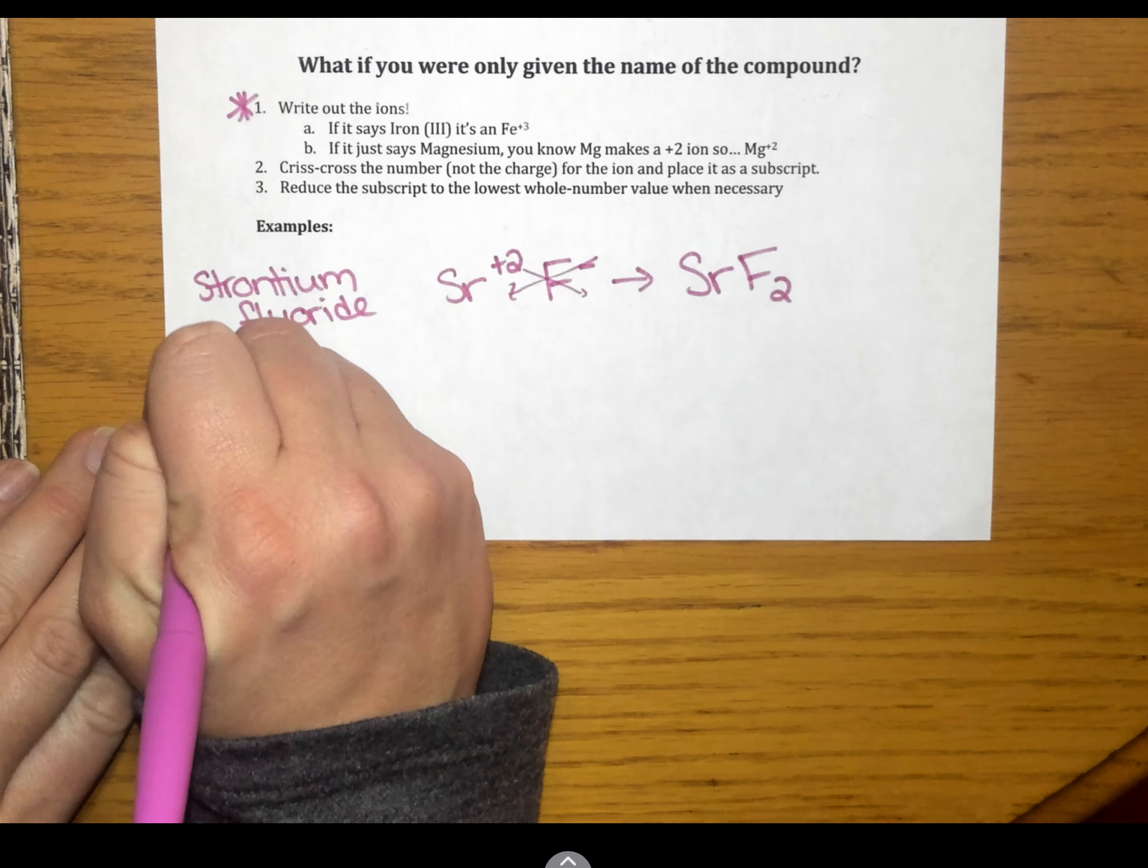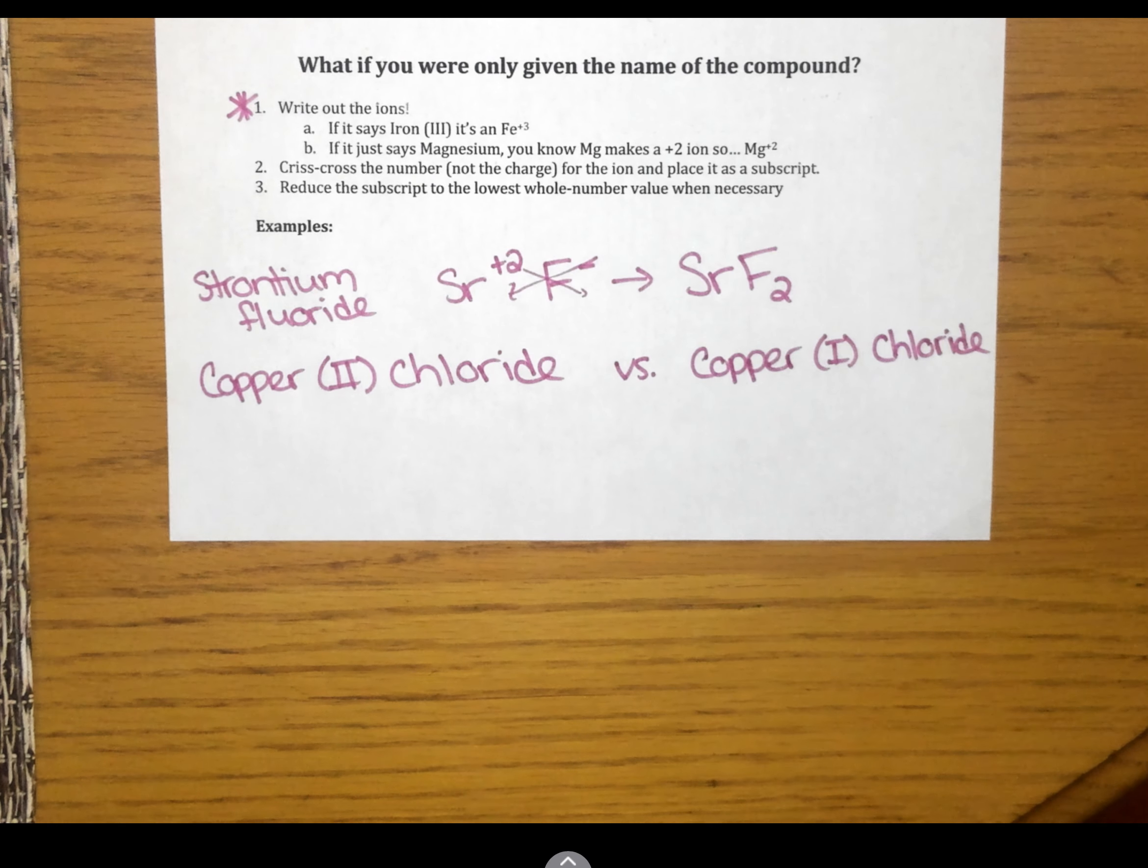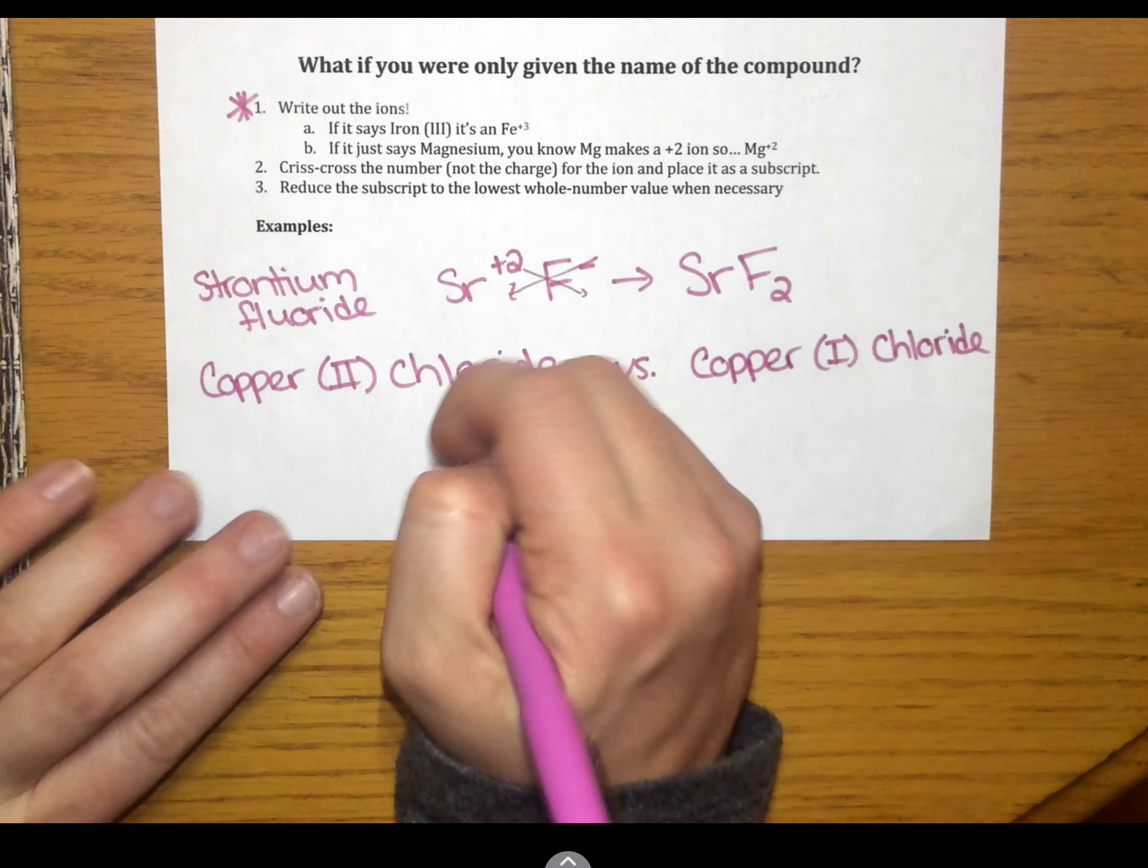So, we were able to figure out both of those just based off the placement on periodic table. Now, if I were to give you something like copper 2 chloride versus copper 1 chloride.